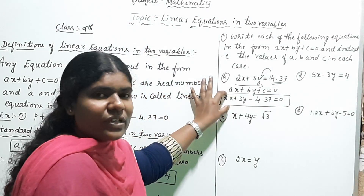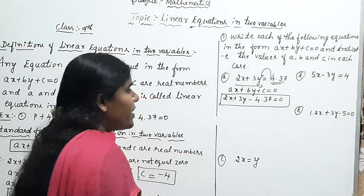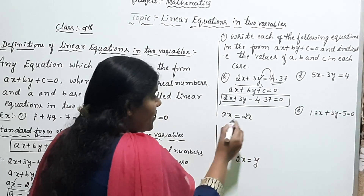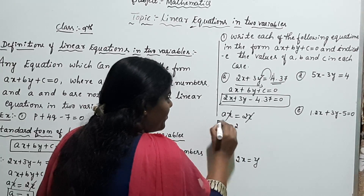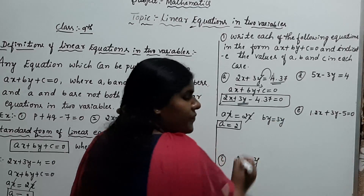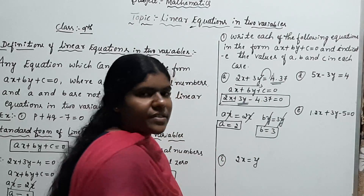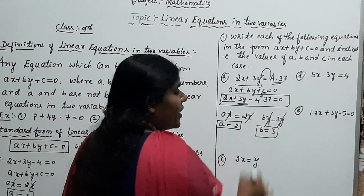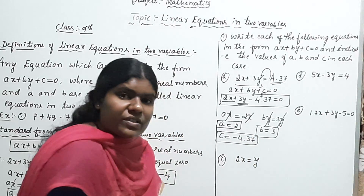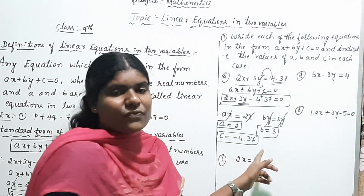Now find A, B, and C. Comparing: AX equals 2X, so X cancels and A equals 2. BY equals 3Y, so Y cancels and B equals 3. The constant term C equals minus 4.37. Therefore A equals 2, B equals 3, and C equals minus 4.37.